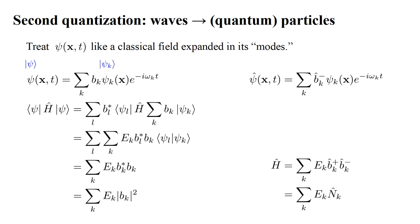Based on our experience with second quantization of the electromagnetic field, we expect that if the coefficient B_k becomes the destruction operator B-hat_k minus, then the conjugate of B_k should become the creation operator B-hat_k plus. So the quantum field theory Hamiltonian will be the sum over k of E_k times B-hat_k plus times B-hat_k minus. The creation operator times the destruction operator is the number operator N-hat_k. So finally, the Hamiltonian operator is the sum over k of E_k times N-hat_k — that is, the energy is simply the sum over all atomic orbitals of the orbital energy times the number of electrons in that orbital.